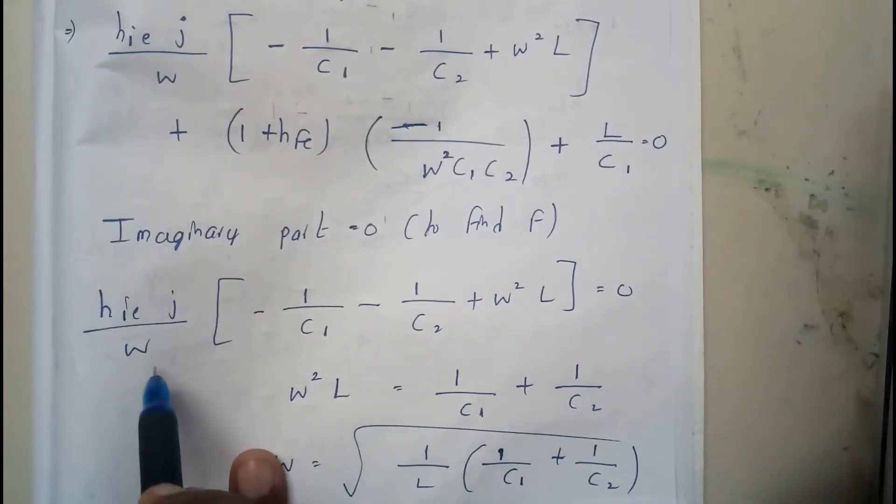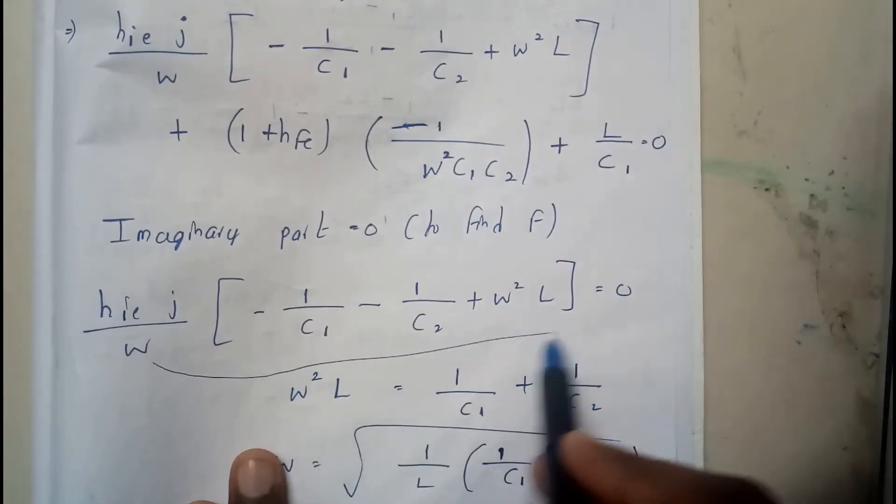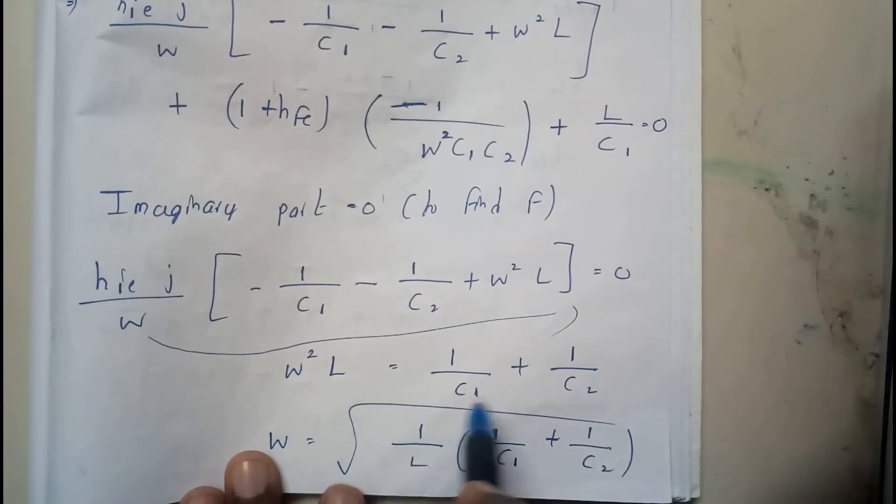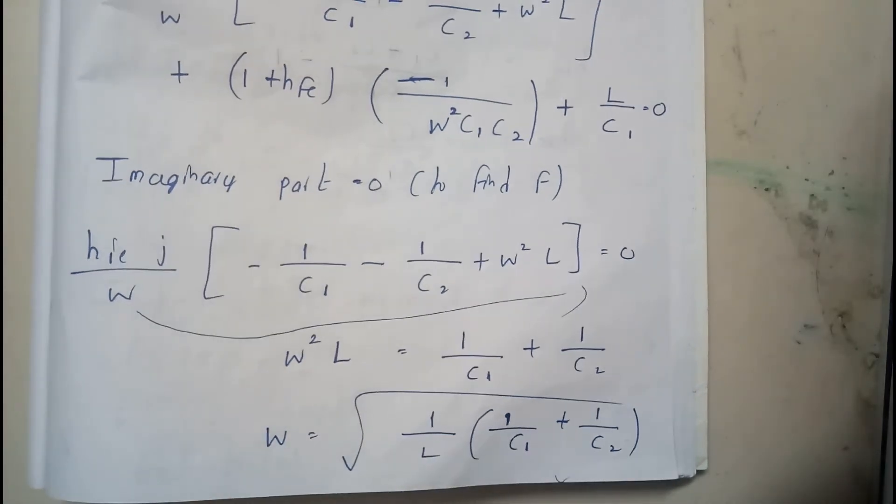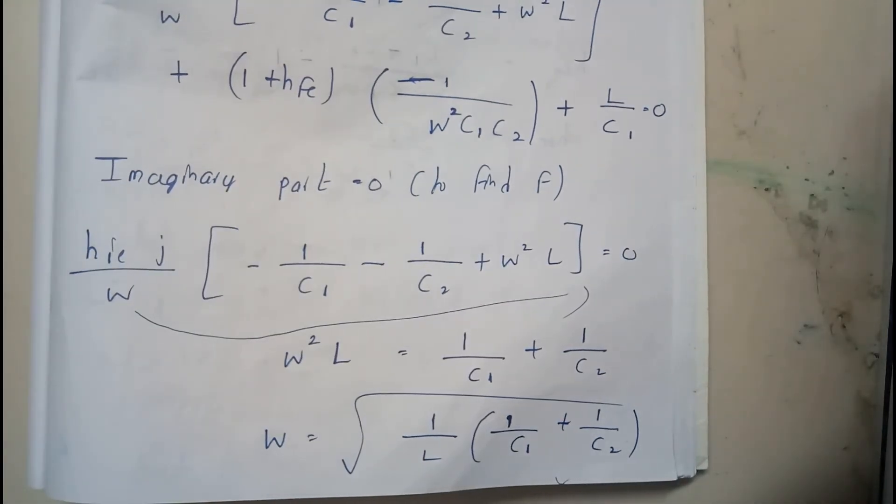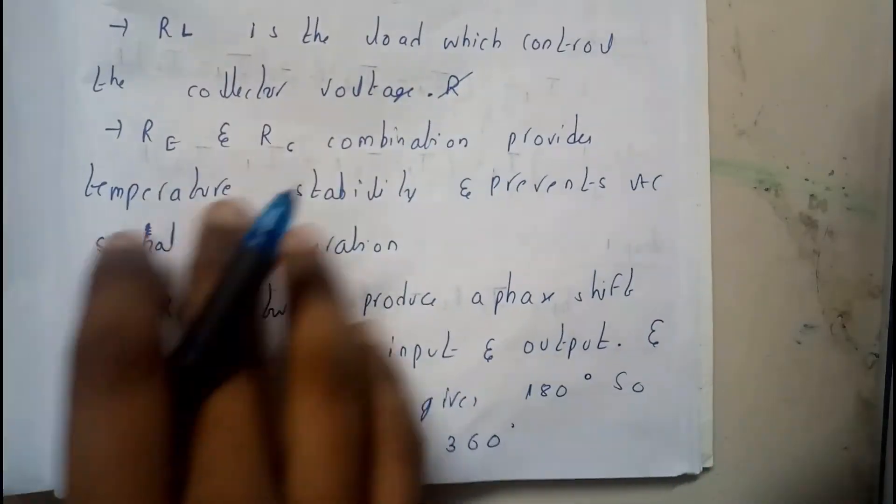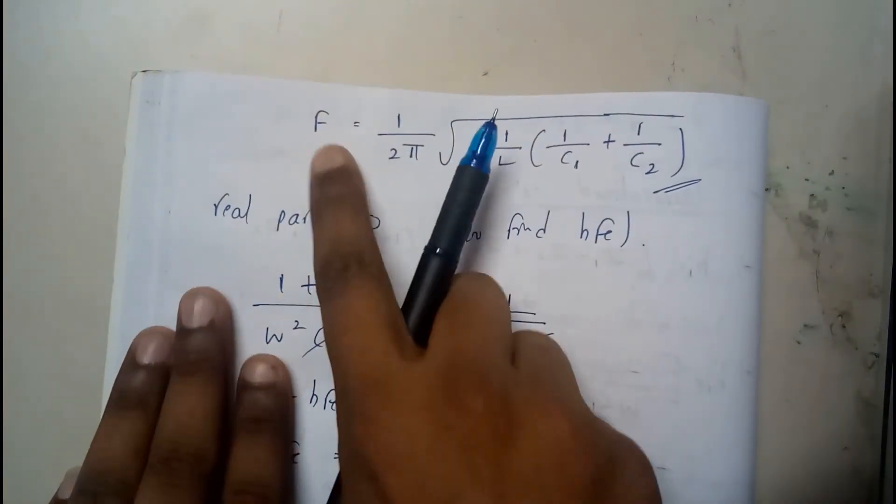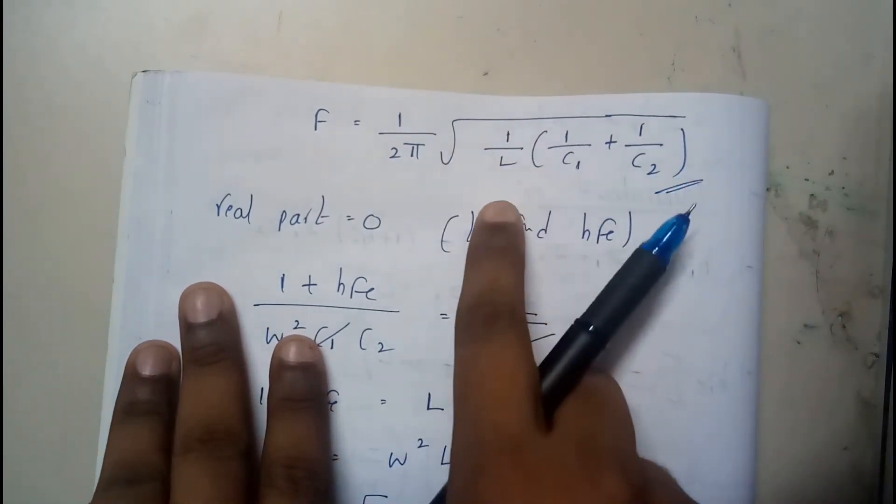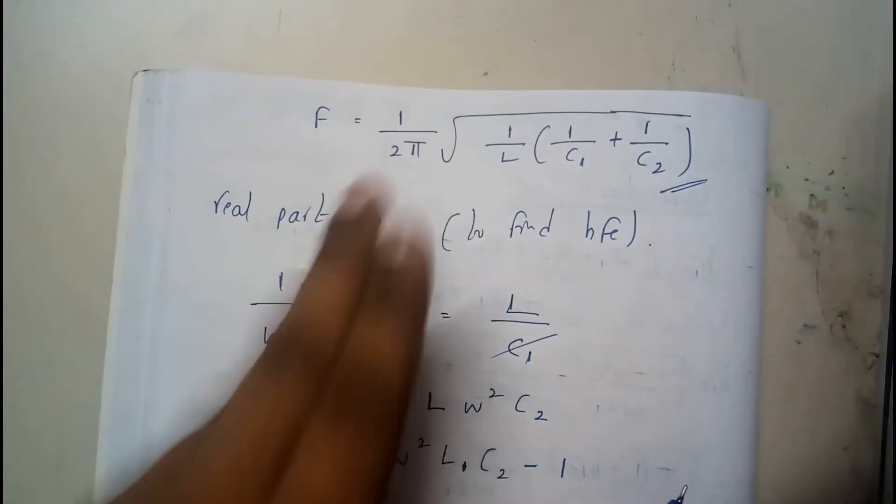So I have just tried to make it, I have sent this whole part to the other side. So 0, omega square L is equals to 1 by C1 plus C2. Omega is equals to under root 1 by L into 1 by C1 plus 1 by C2 where omega is nothing but 2 pi F. So we will be dividing on the other side with 1 by 2 pi. So F equal to 1 by 2 pi under root 1 by L into 1 by C1 plus 1 by C2.